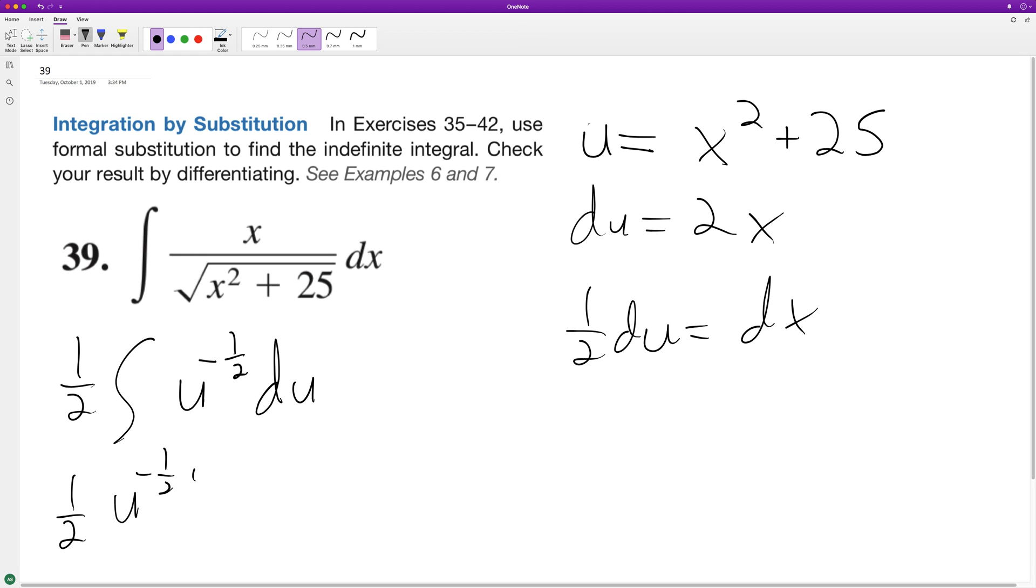So this gives us one half over one half, so that's equal to 2 u raised to the one half. So these cancel out and we're just left with u to the one half plus C, or the square root of u.